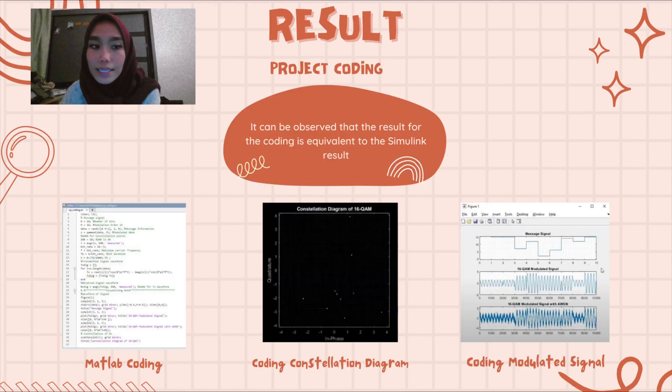This is the MATLAB coding, and from the coding we got the constellation diagram and the modulated signal. It can be observed that the result for the coding is equivalent to the Simulink result.